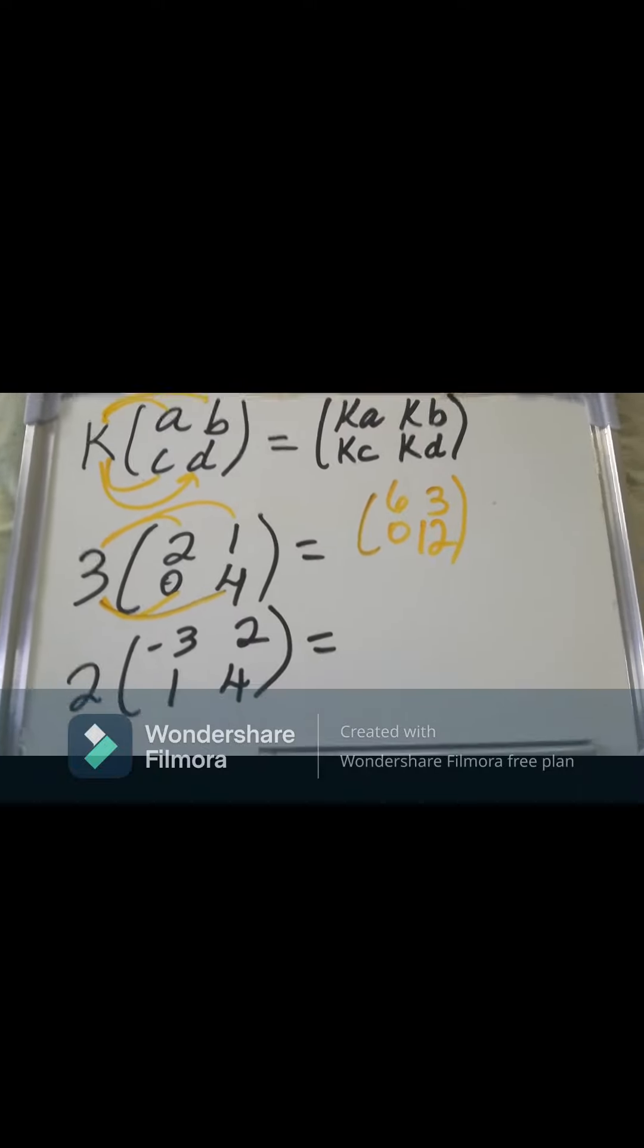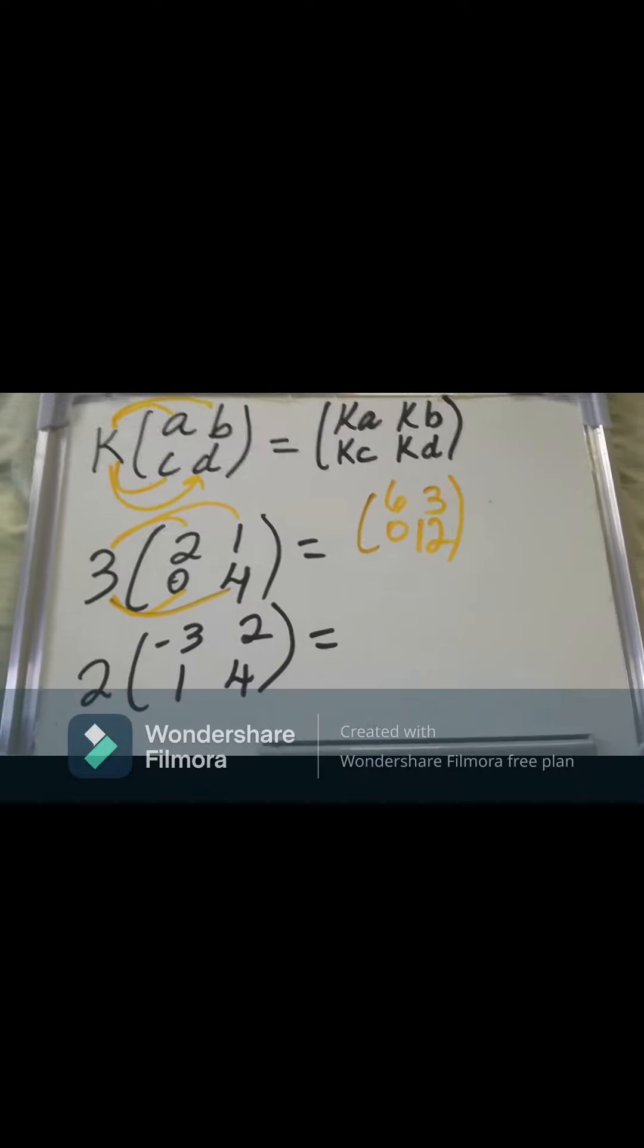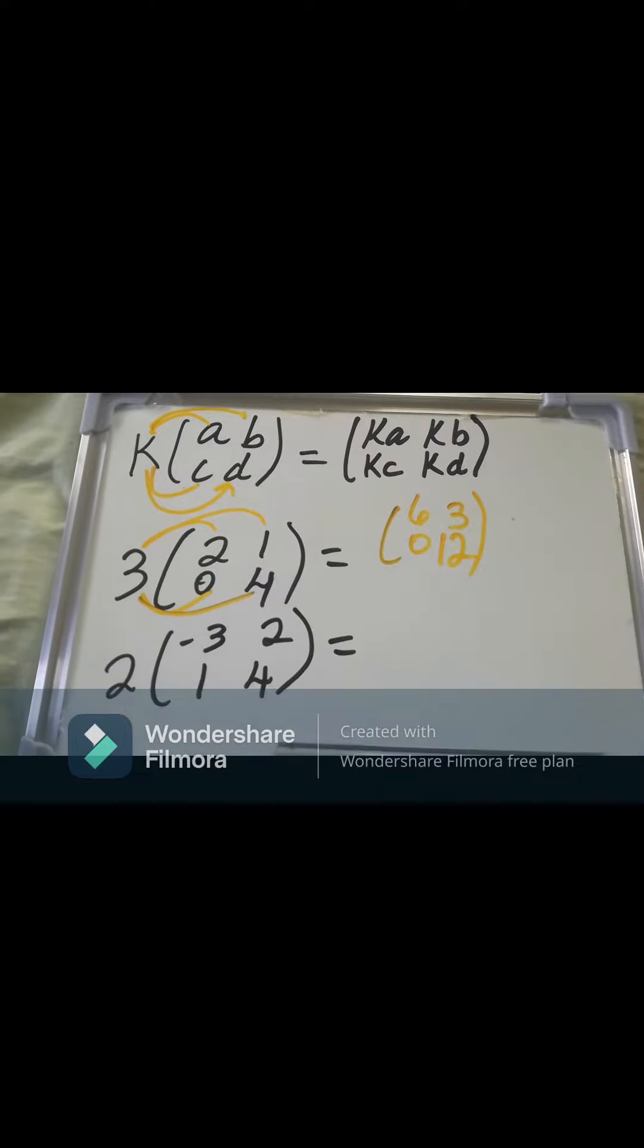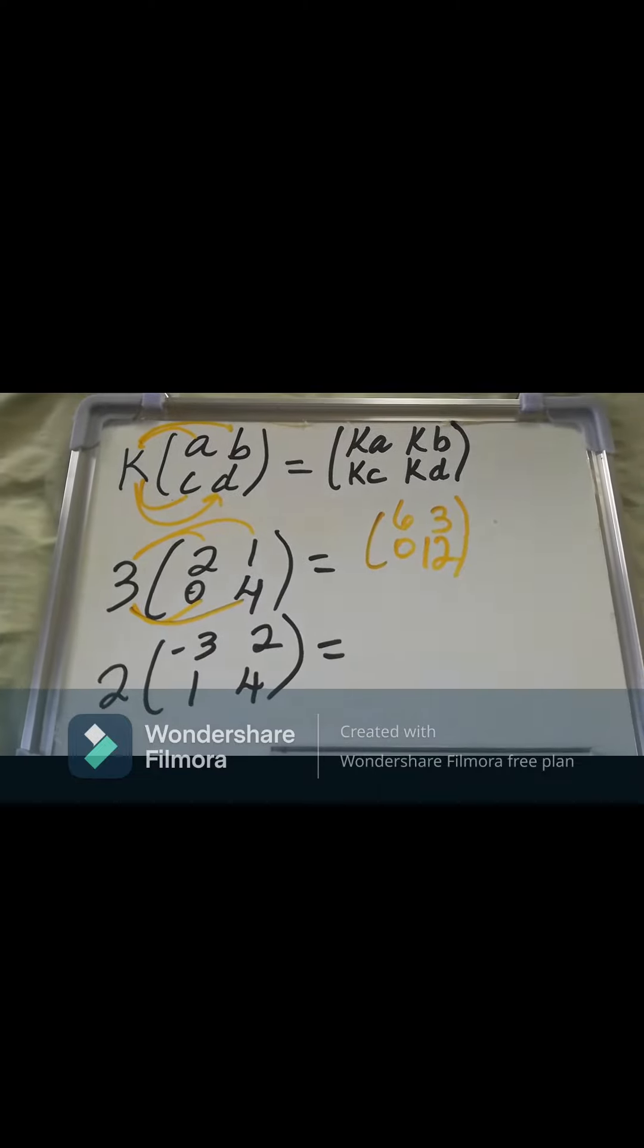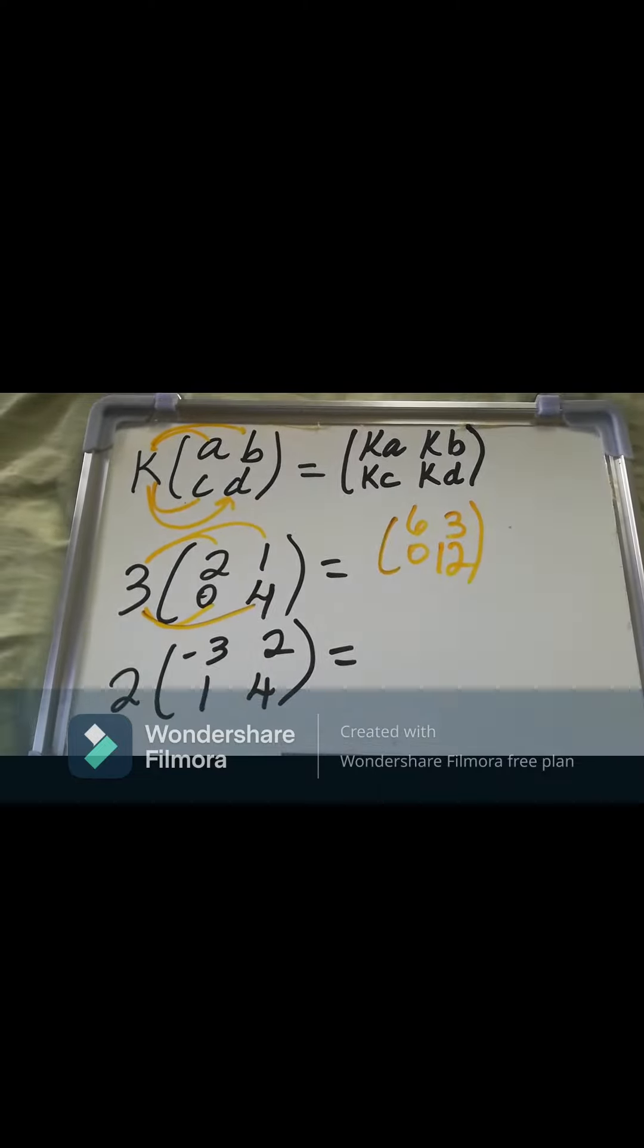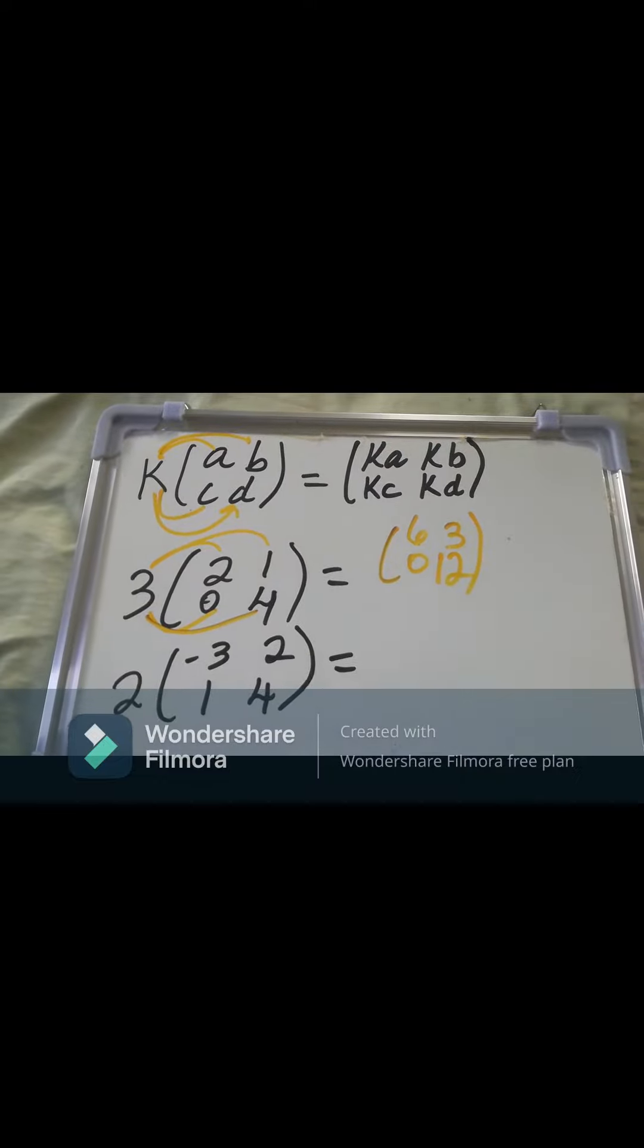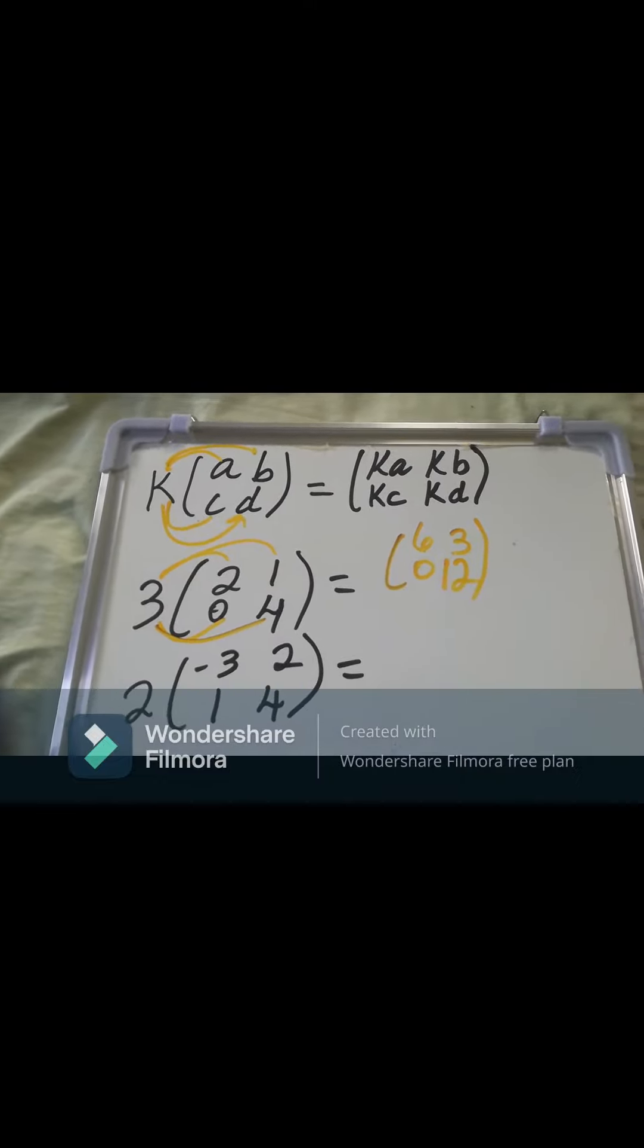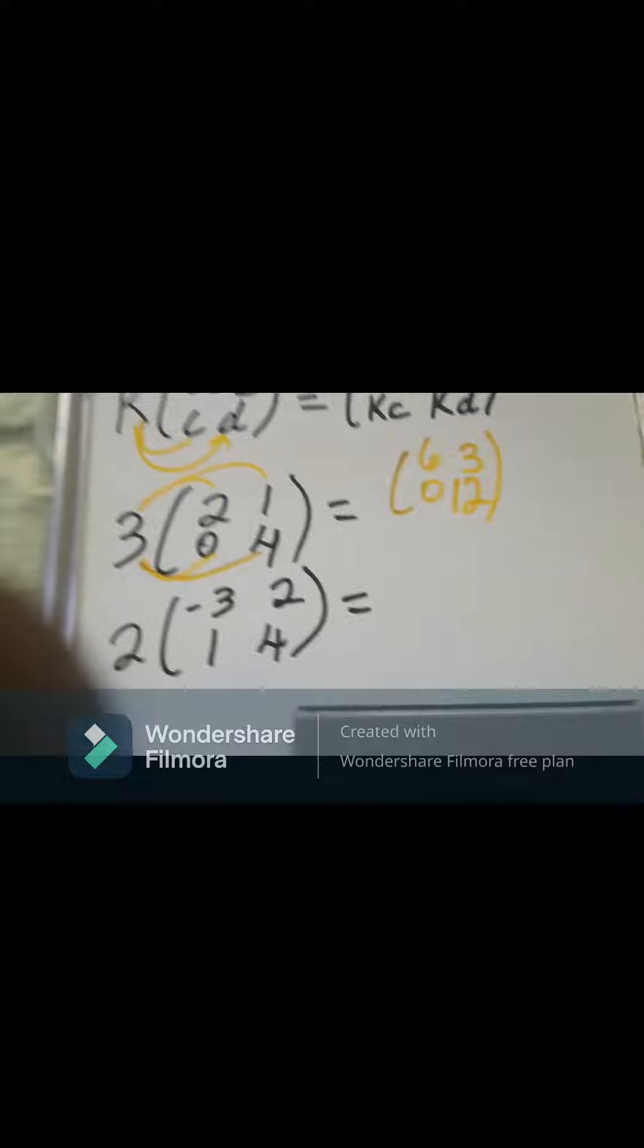So we multiply 3 by 2, 3 by 1, 3 by 0, then 3 multiplied by 4. So when we did that, 3 multiplied by 2, we got 6. 3 multiplied by 1, we got 3. 3 multiplied by 0, which is 0.